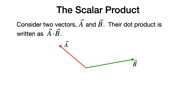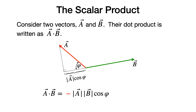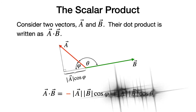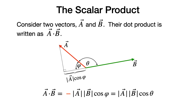Now consider two vectors a and b where the angle between them is larger than 90 degrees. Let's consider how much of a points in the direction of b. We use the angle phi, obtained between vector a and the extension of b in the direction of a. The component of a along that direction is a times cosine phi, but it points in the opposite direction of b. So a dot b equals minus the magnitude of a times the magnitude of b times the cosine of that small angle phi. Using trigonometry, we can rewrite this in terms of the angle theta between the two vectors, giving simply the magnitude of a times the magnitude of b times the cosine of theta. Since theta is larger than 90 degrees, the cosine will be negative, giving a negative result, as expected since a and b do not point in the same direction.